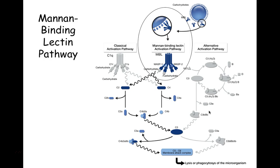Cleaving C3 into a large and a small fragment: the C3b combines with the C4b2b on the bacterial cell surface and creates the C5 convertase, which then leads to the formation of the membrane attack complex. Notice in this illustration we also have the comparison of the classical, MBL, and the alternative pathways.